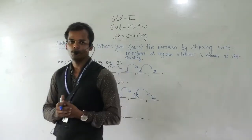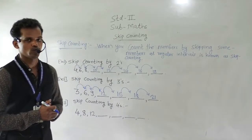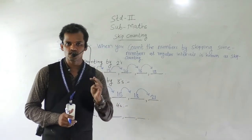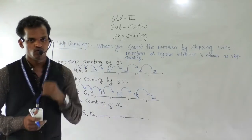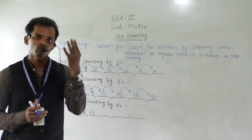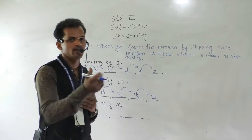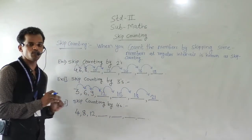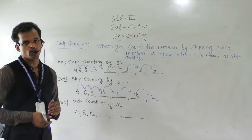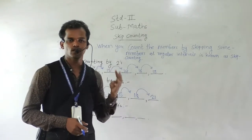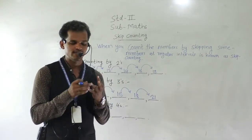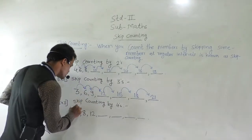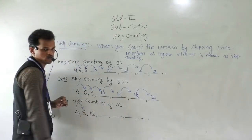Next example: skip counting by 4's. Here we have to skip counting by 4. Every time we have to leave 4 numbers and find the next number. First number is 4. So after 4, count forward by 4: 5, 6, 7, 8. So 4 plus 4 is 8.